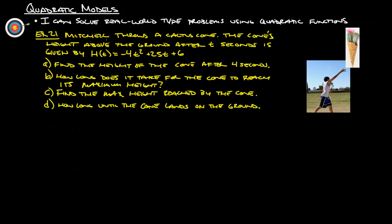This is similar to example 21. Mitchell throws a cactus cone. The cone's height above the ground after t seconds is given by this formula here. So it says after t seconds is given by the height. So t, in this case, is our x, right? And then the height is our y, as to what we're used to anyway.